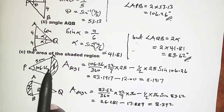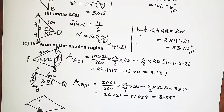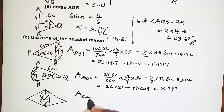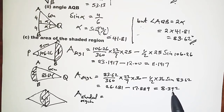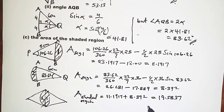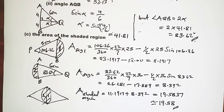To get the total area of the shaded region we combine the two segments: area of shaded region equals area of segment 1 plus area of segment 2, that is 11.1917 plus 8.392, giving 19.5837, approximately 19.58 square centimeters to 4 significant figures. Thank you for watching, see you next time.